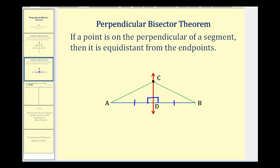Segment CD is congruent to itself, so by side-angle-side, these two triangles are congruent, and therefore side AC would be congruent to side BC. Let's go ahead and write this up.